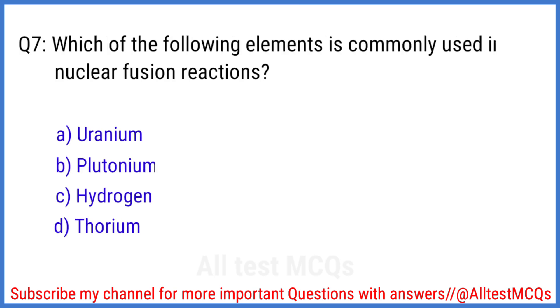Q7. Which of the following elements is commonly used in nuclear fusion reactions? The right answer is option C. Hydrogen.